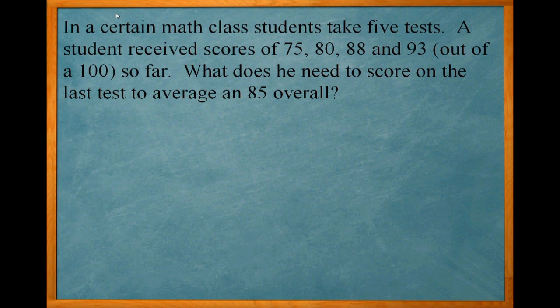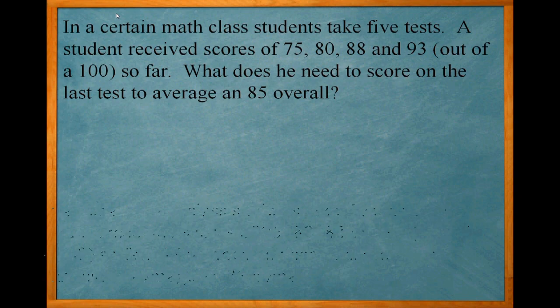Now to find an average of a set of numbers, what do you do? You add them all together and divide by how many there are. That will give you the average or the mean.